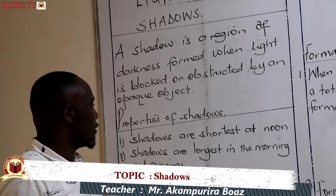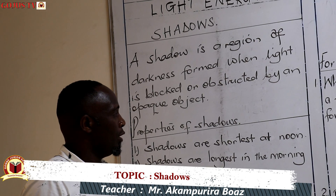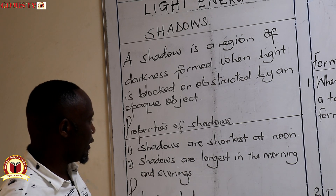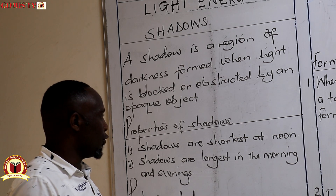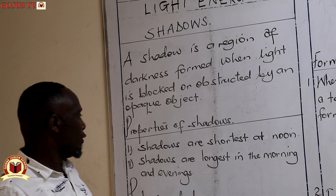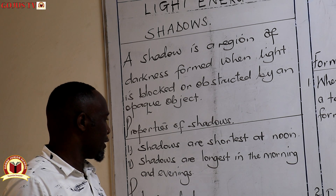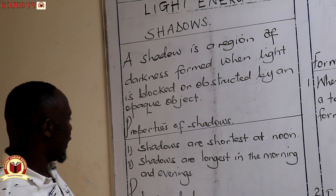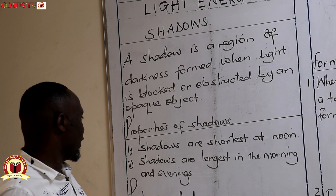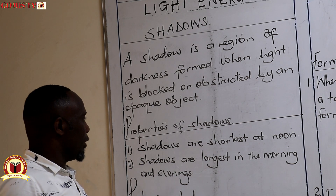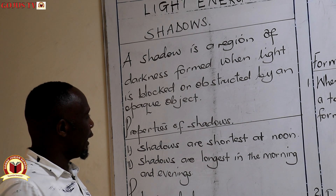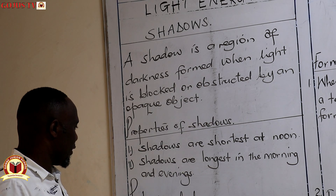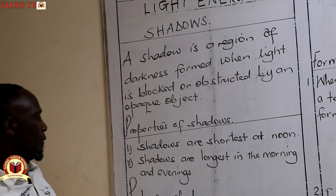Shadows have properties. Number one, shadows are shortest at noon or midday. The reason is that the Sun is overhead the object, so shadows normally appear shortest at noon. Two, shadows appear longest in the morning and evening hours because the Sun is at the horizon. Early in the morning the shadows are longer, and in the evenings as well. This is also a common question: why are shadows shorter at noon, or why are shadows longer in the morning and evening?